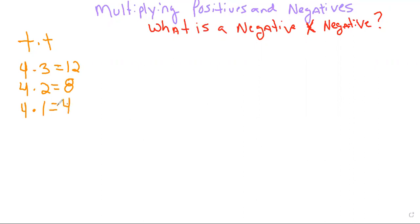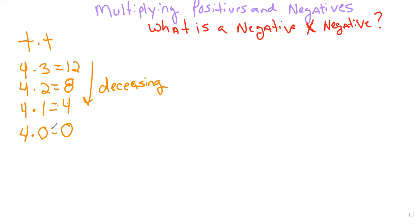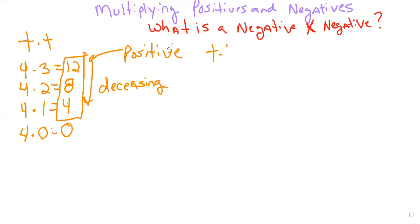What you'll notice is these numbers are decreasing in value. And what are they approaching? They're approaching zero. So if I do four times zero, we get zero. What we've done here is positive times positive, and you'll notice that all of these numbers are in fact positive. So positive times a positive gives us a positive.